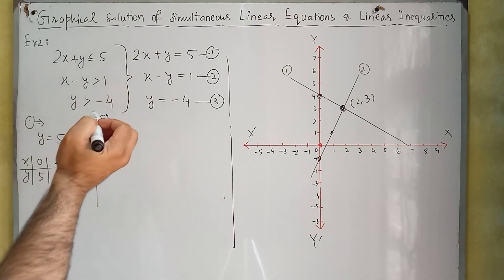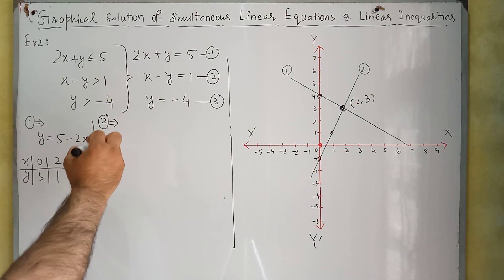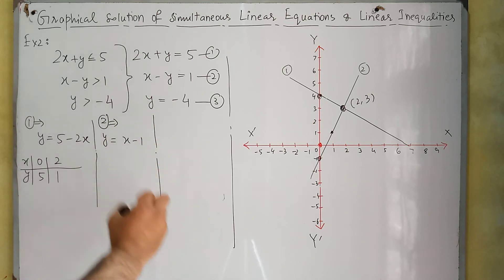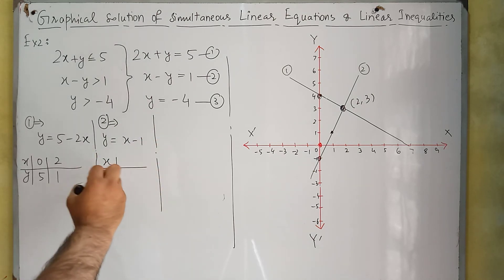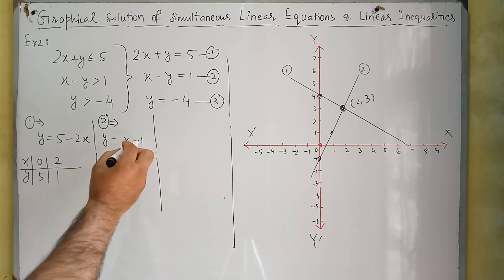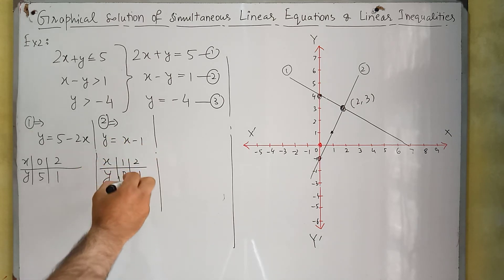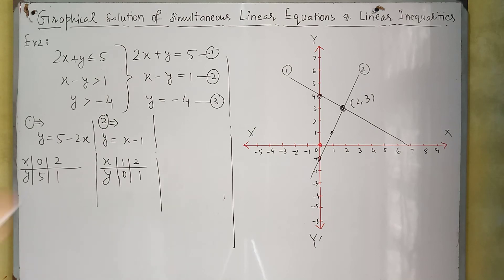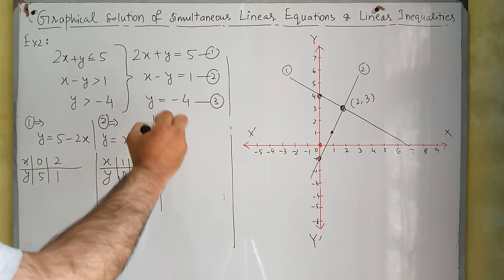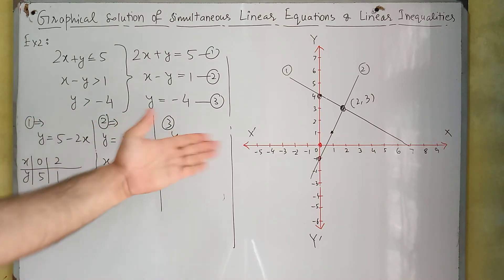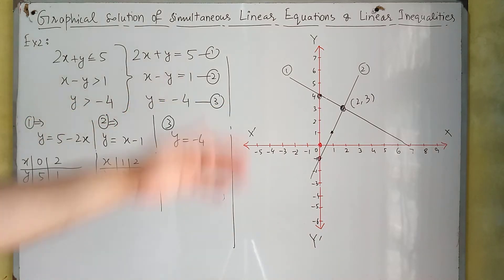Now for equation 2, making Y the subject gives Y equals X minus 1. If we substitute X equal to 1, then Y will be equal to 0, and if X equals 2, then Y equals 1. For equation 3, Y equals minus 4 — since we have only one variable, there is no need to find coordinates; we can draw this graph directly.